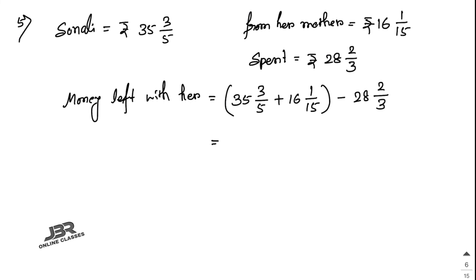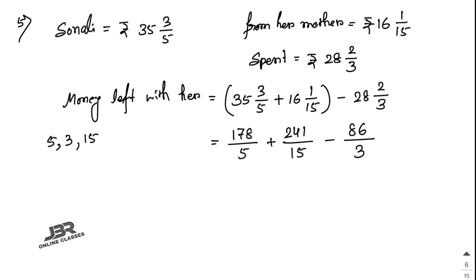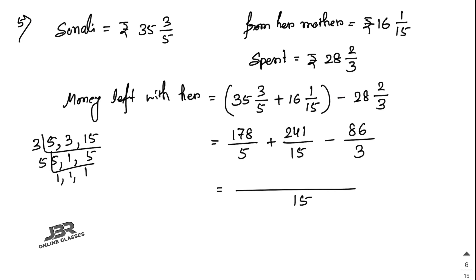Convert to improper fractions: 35 times 5 is 175 plus 3 gives 178/5; 16 times 15 is 240 plus 1 gives 241/15; 28 times 3 is 84 plus 2 gives 86/3. Find the LCM of 5, 15, and 3. Since 3 ones are 3 and 5 ones are 5, the LCM is 15.